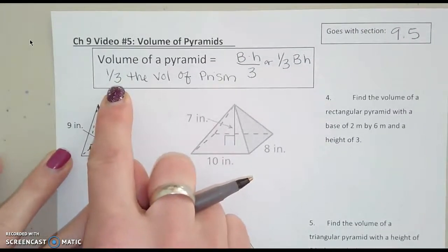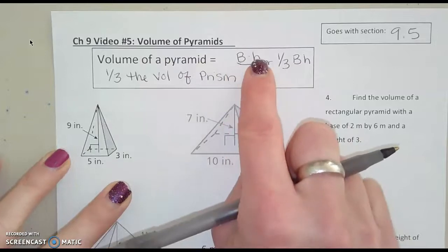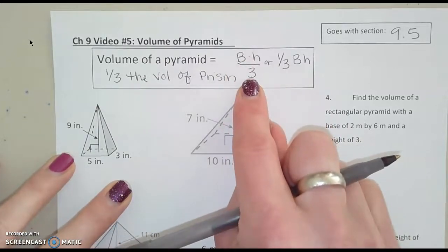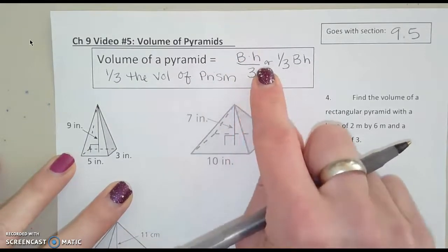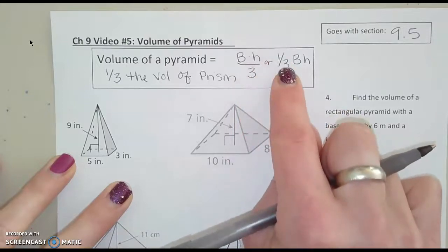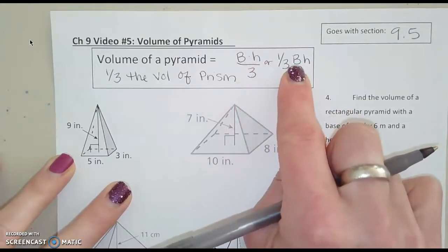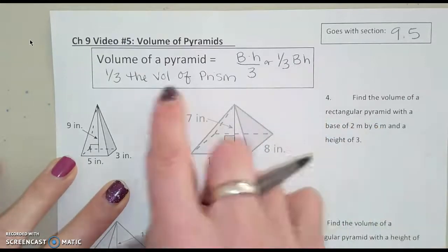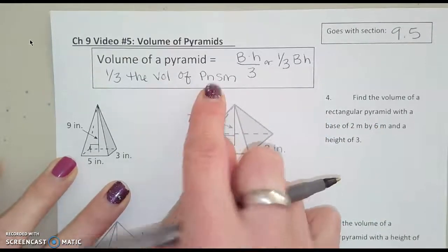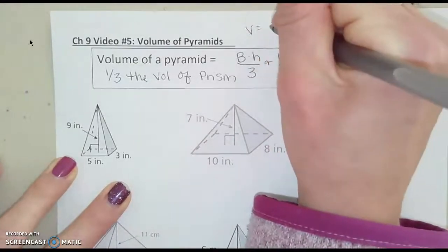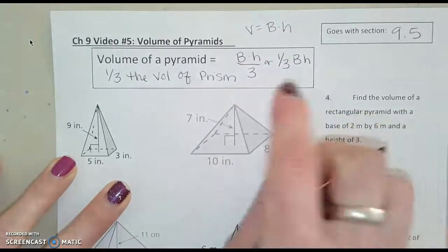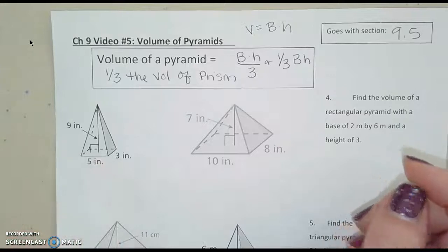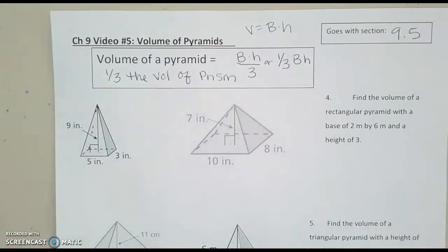So volume of a pyramid, we can write as capital B times H divided by 3, like a big fraction this way, or you could say one-third times capital B, the area of the base, times height. So we're still going to have to remember how to find the volume of the prism. That's why we have this up here, but then we're going to divide that answer by 3.